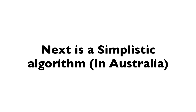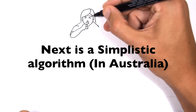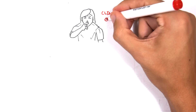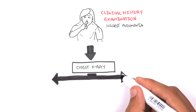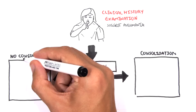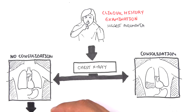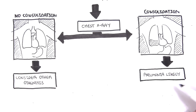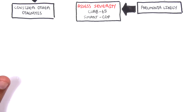Let's put everything into an algorithm. First, clinical history and examination suggestive of pneumonia — order a chest x-ray. The chest x-ray can show no consolidation or consolidation. If no consolidation, consider other diagnoses, plus or minus pneumonia. If the chest x-ray shows consolidation, pneumonia is most likely. Assess the severity using CORB-65, CURB-65, or SMARTCOP.